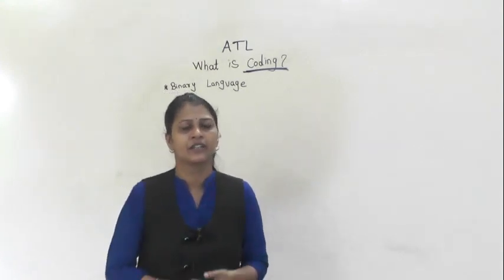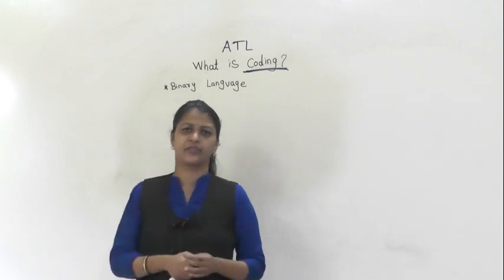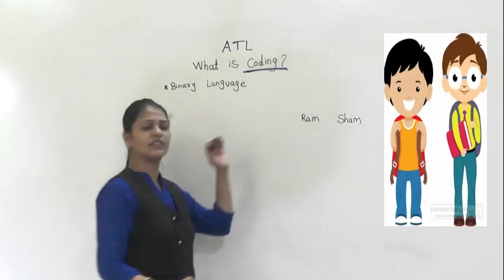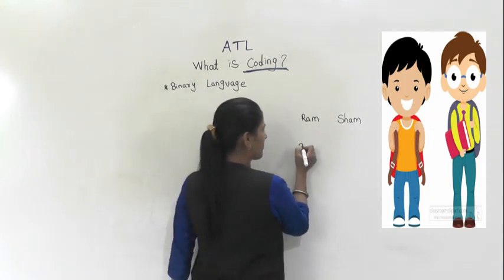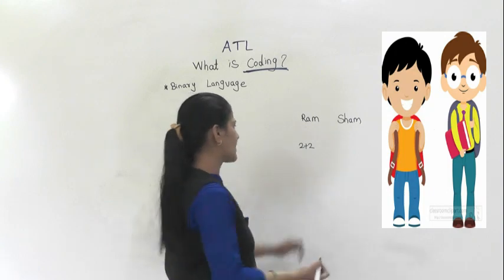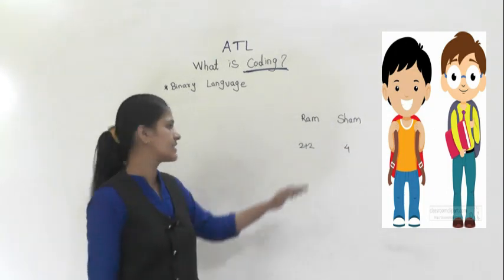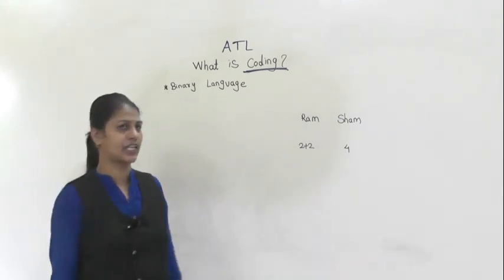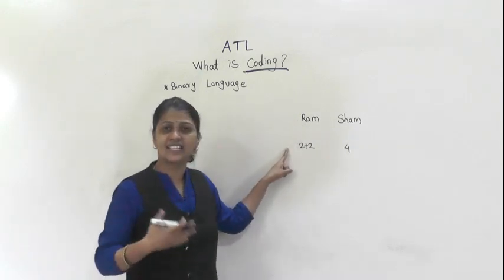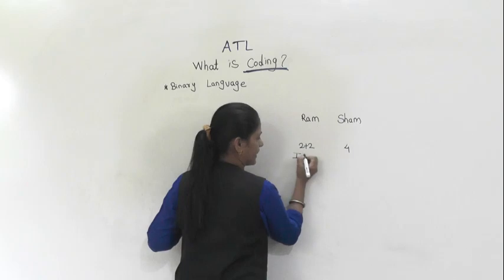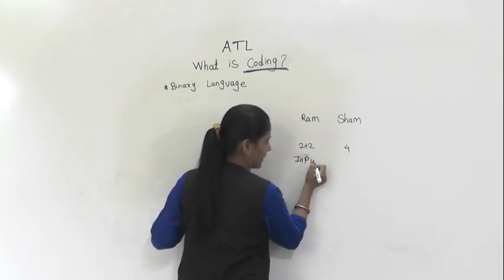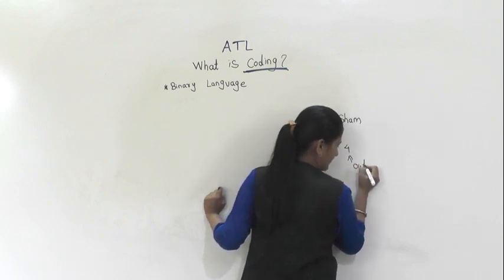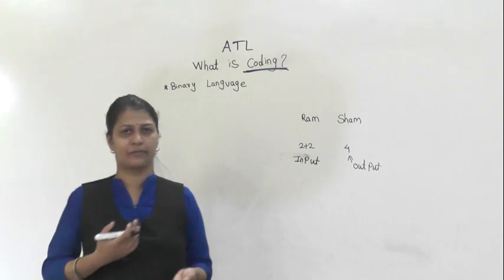For example, there are two people: Ram and Sham. When Ram asks Sham, 'What is 2 plus 2?', Sham answers 4. Ram asking the question is the input, and Sham giving the answer 4 is the output.